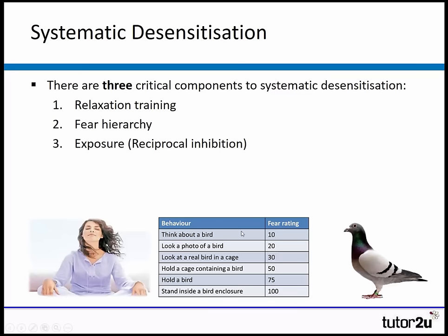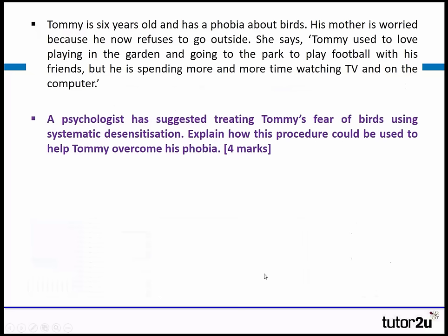Step three is the exposure — you expose the person to their fear hierarchy starting at the bottom and working up, and the key is that by the time they get to the top they should be cured of their fear. Putting that back into the context of Tommy: relaxation training first, then a fear hierarchy listing from least feared — seeing a picture of a bird — up to the most feared, standing inside a bird enclosure.